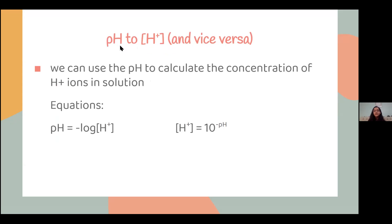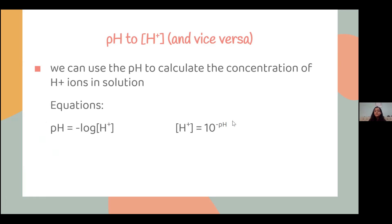pH is a measurement of the concentration of hydrogen ions — H⁺ ions floating around in the water, which causes the change in acidity. Using pH we can go back and forth between pH and hydrogen ion concentration. The equation for calculating pH from hydrogen ion concentration is the negative log of the concentration of H⁺ ions. The way you go back from pH to hydrogen ion concentration is 10 to the negative pH.